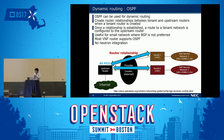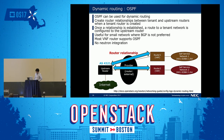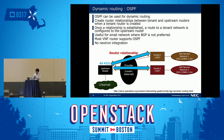The second option is dynamic routing with OSPF. OSPF can be used for dynamic routing configuration. A router relationship is created between the tenant router and the upstream router. Once a relationship is established, the tenant router advertises the tenant network route. OSPF is useful for smaller deployments, as some operators do not want to run BGP in their data center. Unfortunately, there is no Neutron integration implemented so far.